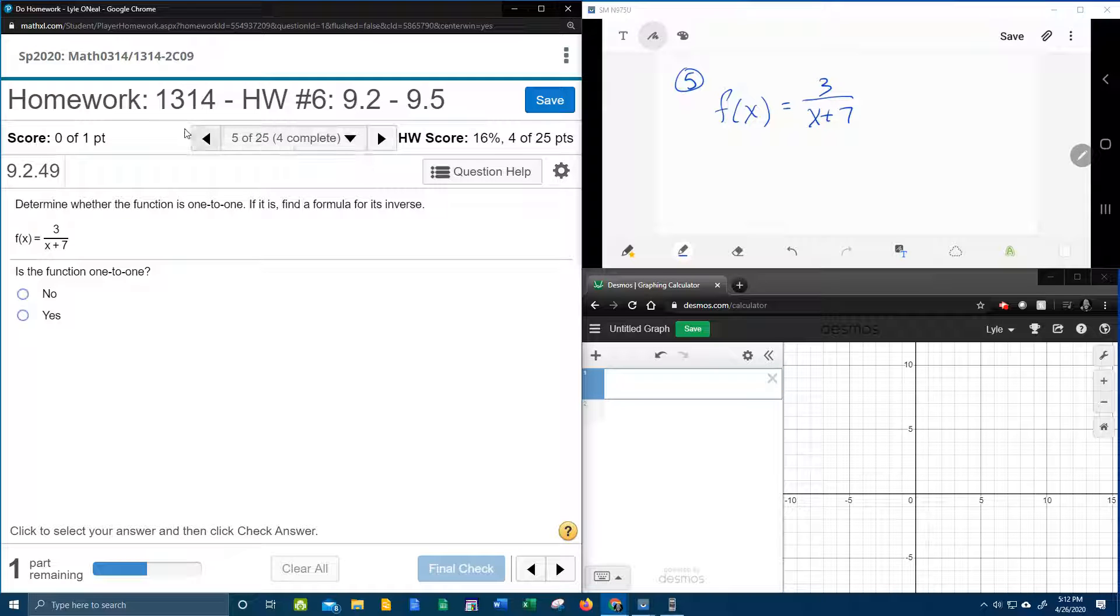Alright, here we go. Question number 5 of our College Algebra homework number 6 in MyLabMath says to determine whether the function is one-to-one. If it is, find its inverse. And so we have a rational function that I've copied down up here.